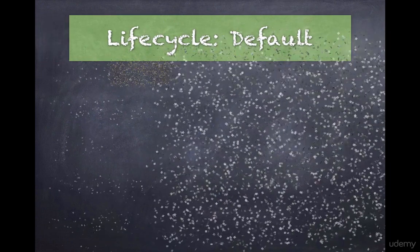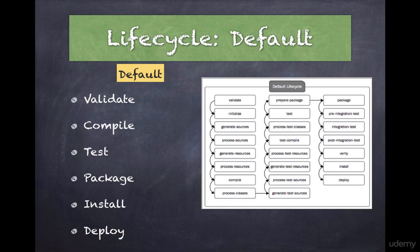Maven follows a well-defined build lifecycle when it builds, tests, and distributes an artifact. The lifecycle constitutes a series of stages or steps that get executed in the same order, independent of the artifact being produced. Maven refers to the steps in the lifecycle as phases.